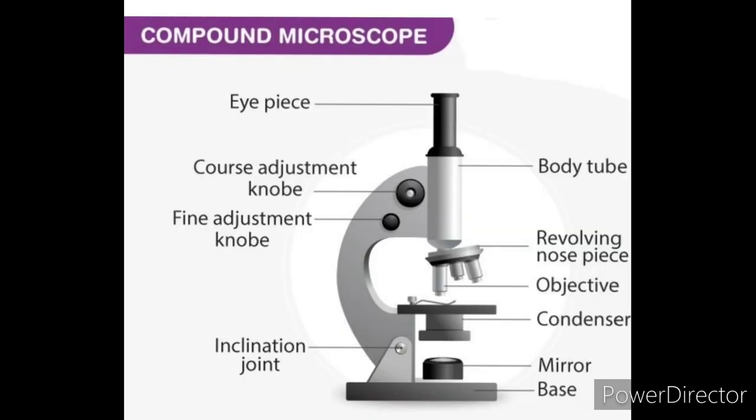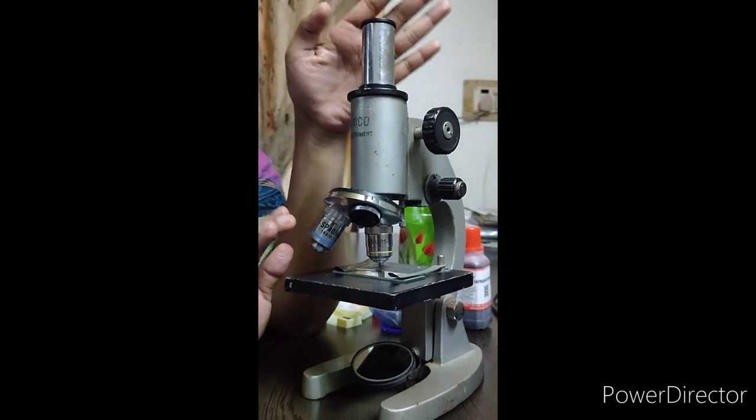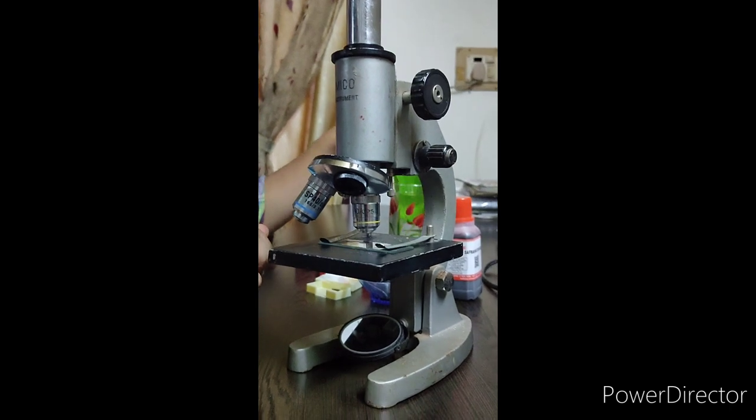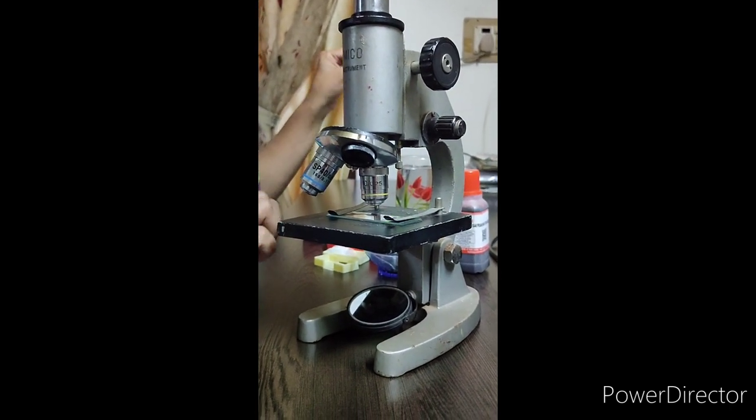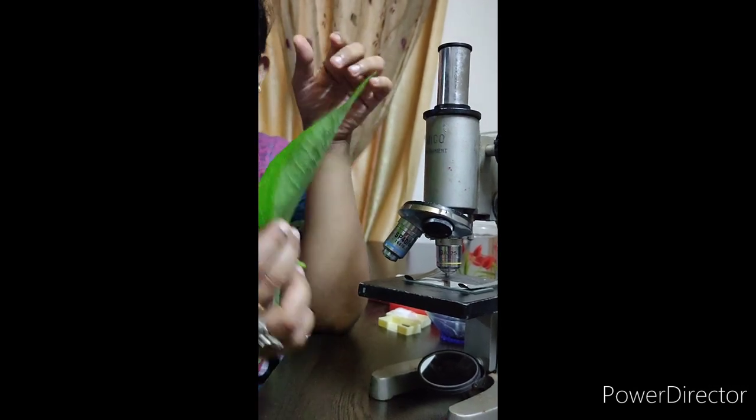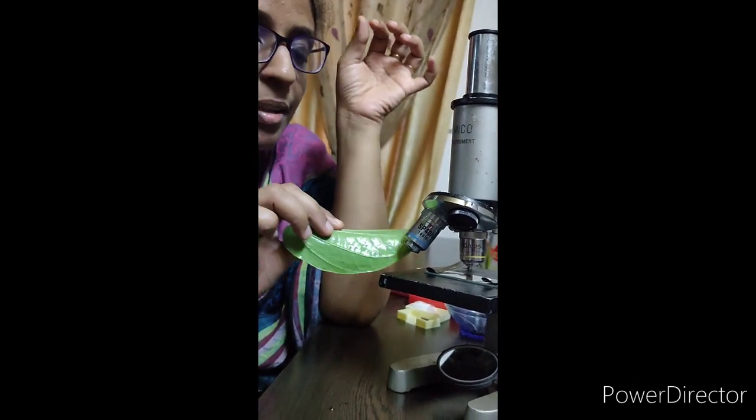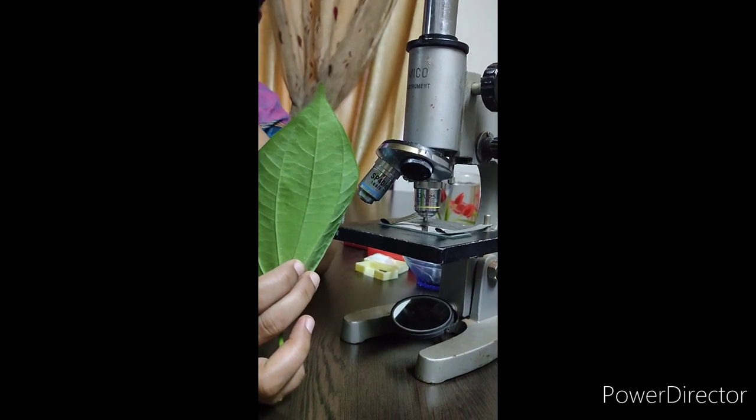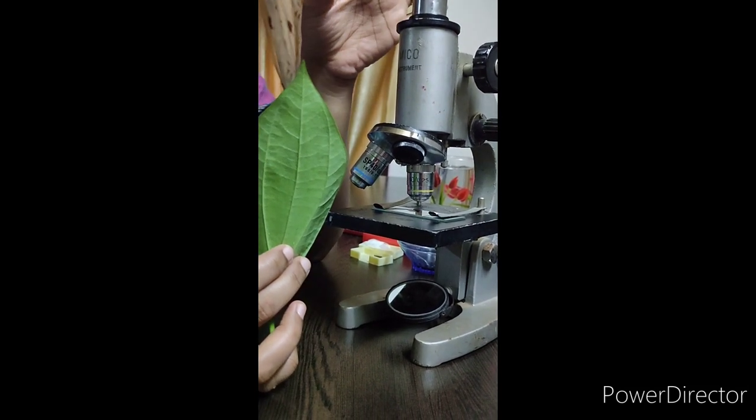Now, here, our objective is to see the stomata. Now, stomatas are present on the leaves. Of course, here, teacher is having a betel leaf with me. Can I just keep this leaf there under the microscope and view? Do you think we can observe a stomata through that? It is not possible.